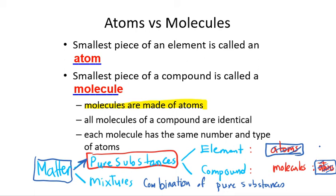That is why in chemistry we prefer to learn more information regarding atoms — like the number of electrons, protons, neutrons, atomic number, mass number, atomic weight, and so on.